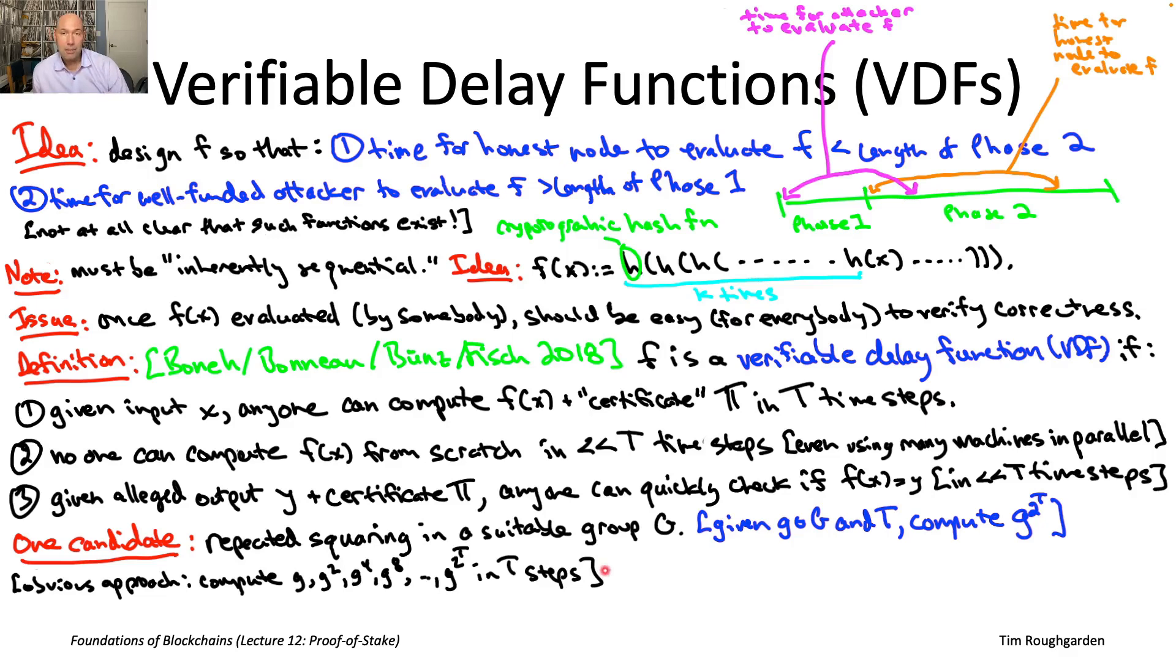First of all, the first property, no matter what the group capital G is, property one is going to hold. There is a straightforward way of computing G raised to two raised to the T, which is just repeated squaring.